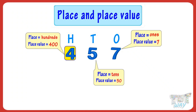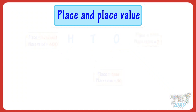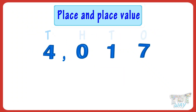The place of four is the hundreds place, and the place value of four is four hundreds, that is four hundred. So kids, let's take another example. Here we have another number. Now let's see the place and place value of each digit in this number.